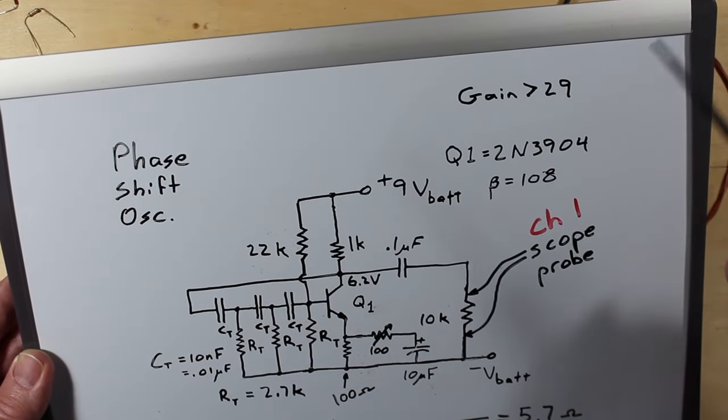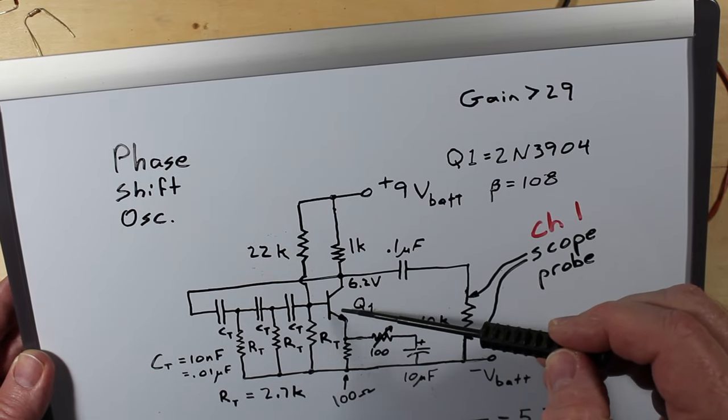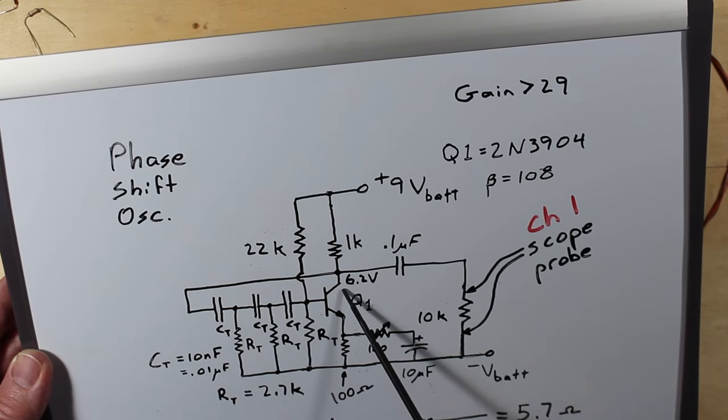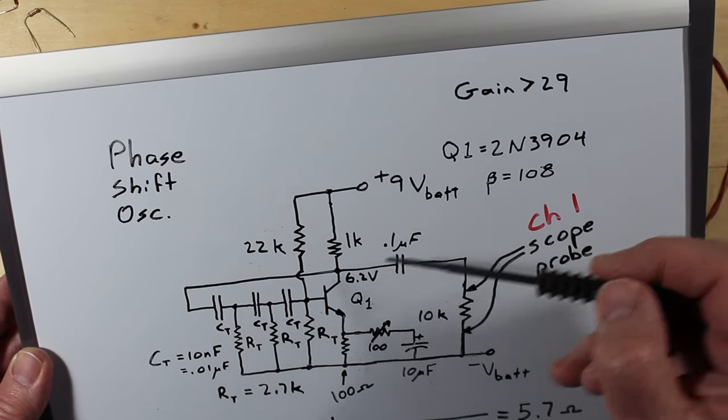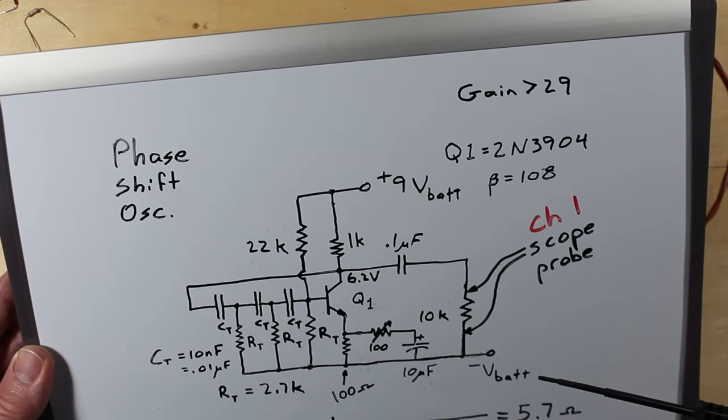So what we have, we've got basically our voltage divider here to bias our transistor here. We end up with about 6.2 volts here. This isn't perfect. I did not try to get this exactly at 4.5 volts. It's unnecessary for our purposes.